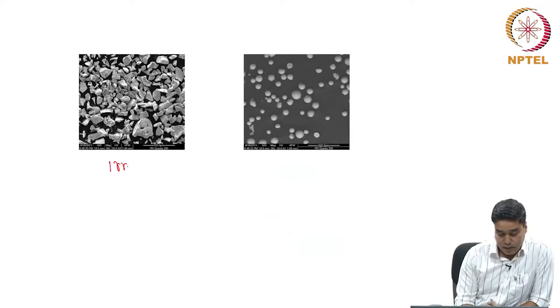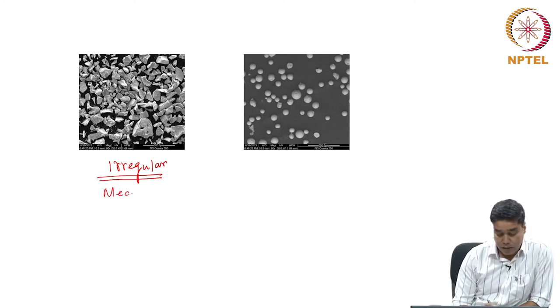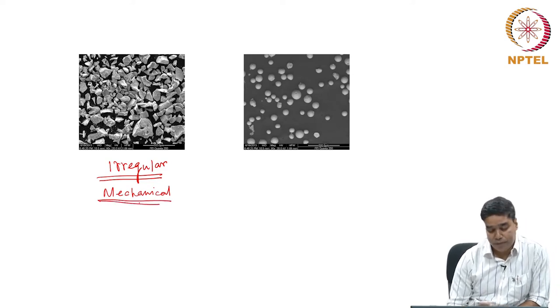One thing that you would have realized by now is that a particular type of fabrication route will give rise to a particular type of particles, especially in terms of their shape and size. For example, if you see this particular image over here, the particle shape is irregular, and if you remember, these particles are generated by the mechanical fabrication process.